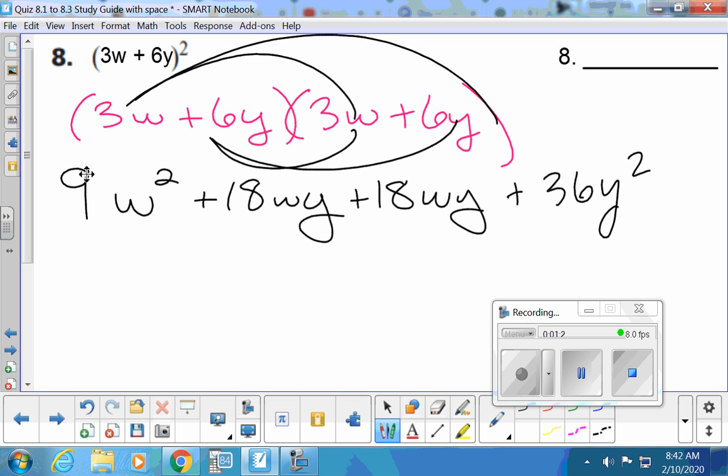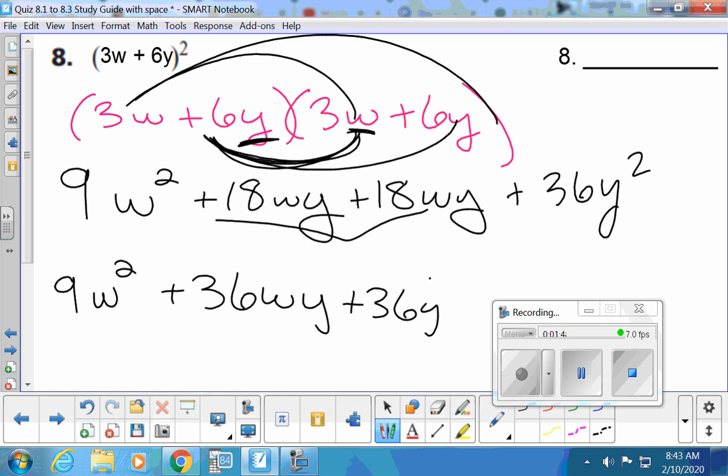Why would the 6y times 6y not be 18wy squared? 6 times 6 is 36, not 18. It doesn't become a Y squared because there's one W and one Y. We're going to combine our two middles and then they're going to be, what's 18 plus 18? 36. That's weird that there's two 36s in our answer, but I'm pretty sure we're right.